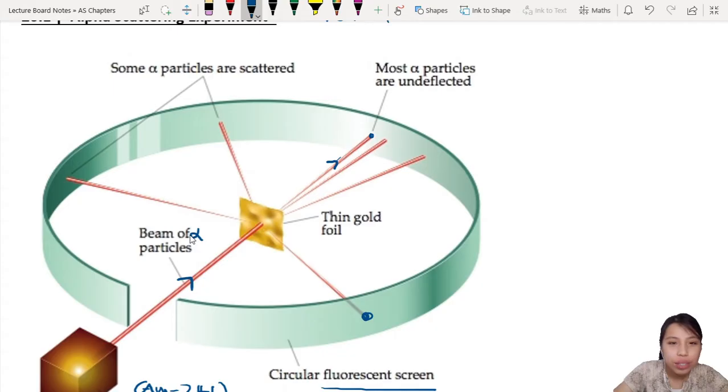They observed the angles and realized lots of cool things. Number one: most alpha particles are undeflected - you shoot straight, they come out straight, as if nothing happened. Second observation: some of the alpha particles are deflected, suddenly deflect with some angle from the middle. Some alpha particles are scattered.